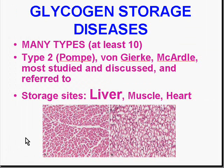In glycogen storage disease there are at least 10 different types. The most classical is type 2 Pompe disease; you may also hear of von Gierke or McArdle's disease. In all of them, glycogen builds up because an enzyme is missing to process it. Glycogen builds up where it is normally stored anyway — in the liver, muscle, and heart — to the point where cells almost look like giant vacuoles. In cardiac muscle, there is significant evacuation-like appearance due to glycogen substrate buildup.